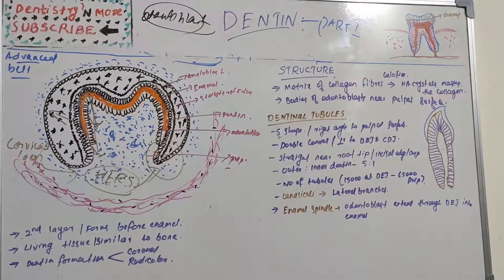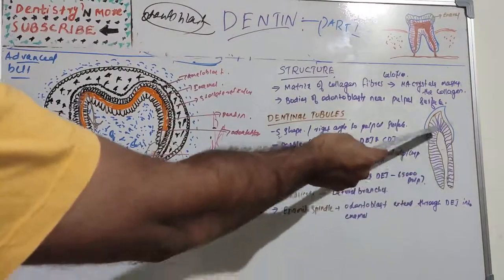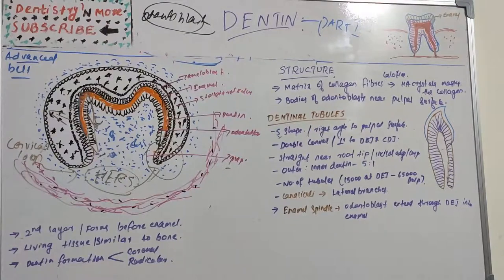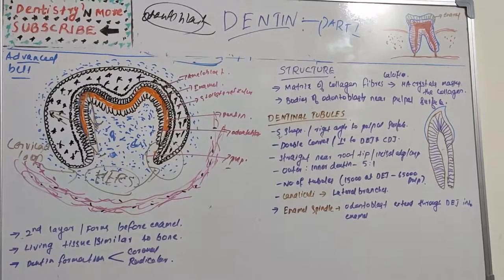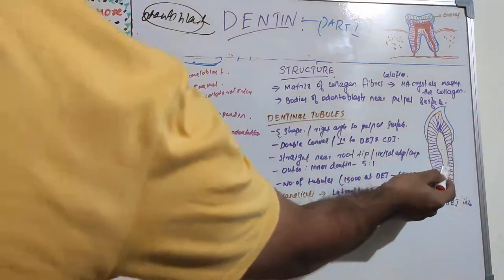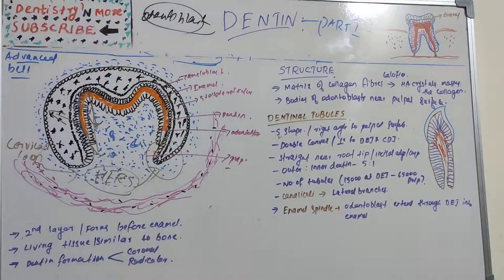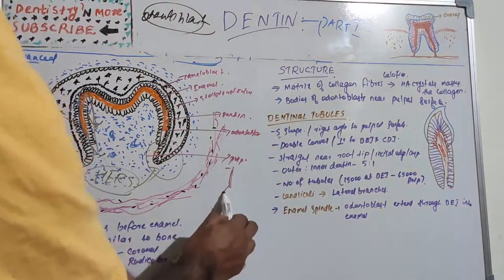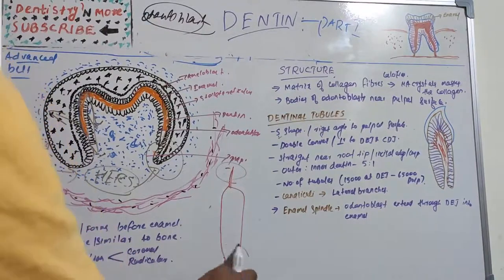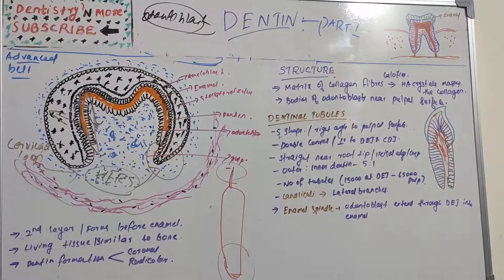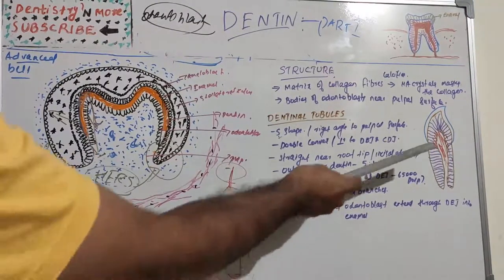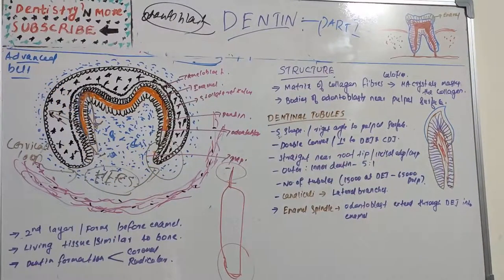The dentinal matrix of collagen fibers is arranged in a network. As dentine calcifies, hydroxyapatite crystals mask the collagen fibers. The bodies of odontoblasts are arranged in a layer on the pulpal surface of the dentine. Only their cytoplasmic processes are included in the tubules in the mineral matrix.